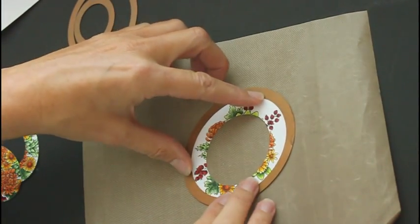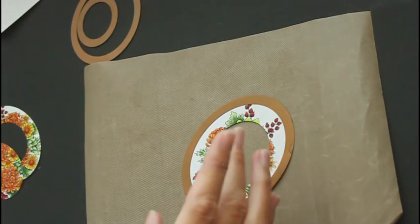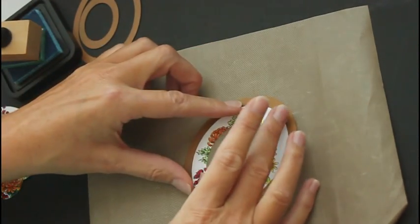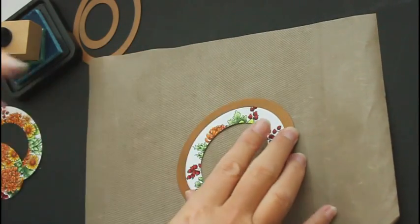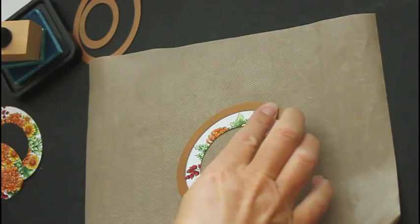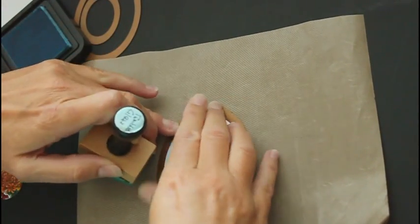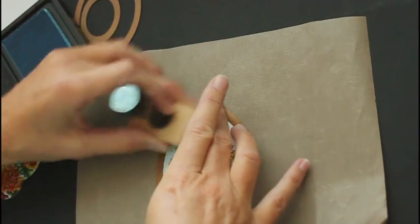And for that I like to place my die back over my cardstock as a stencil. And just sponge the edges. And here I'm using tumbled glass distress ink.